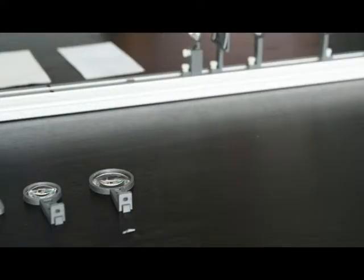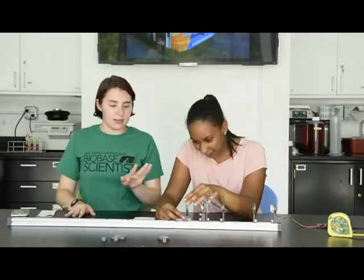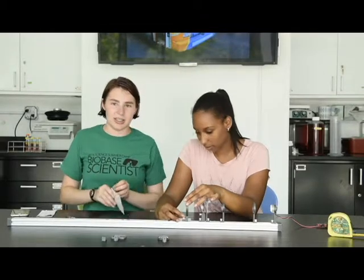After the objective comes the tube lens. This is going to act like the magnifying glass of our microscope. The interesting thing is you can put this anywhere you want on the rail. This is actually a finished microscope if you want to look at a sample with a screen.